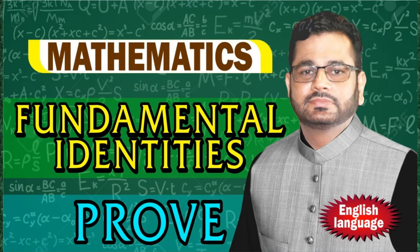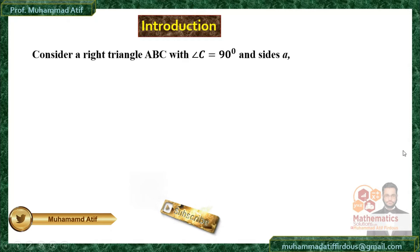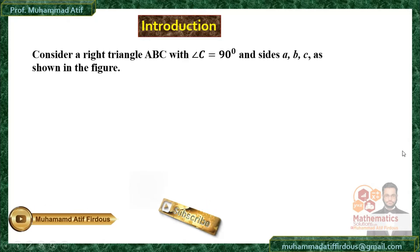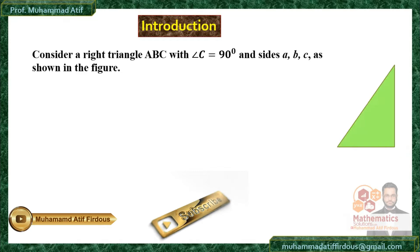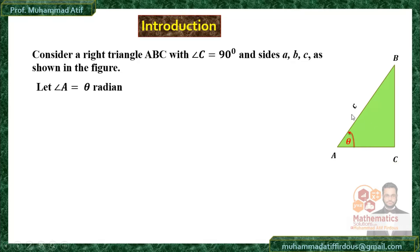Bismillahirrahmanirrahim. Students, now I am going to prove fundamental identities, so I start with some introduction. Consider a right angle triangle ABC having a right angle at vertex C. This is your vertex A having angle theta, then vertex B and vertex C. Opposite to vertex C we have side small c.